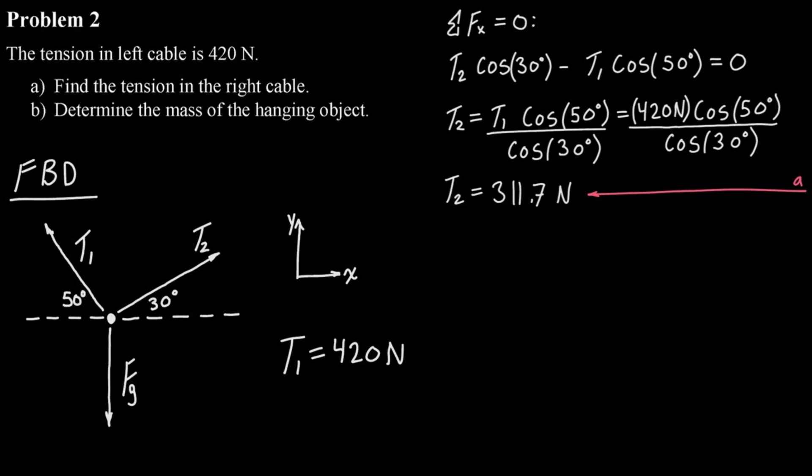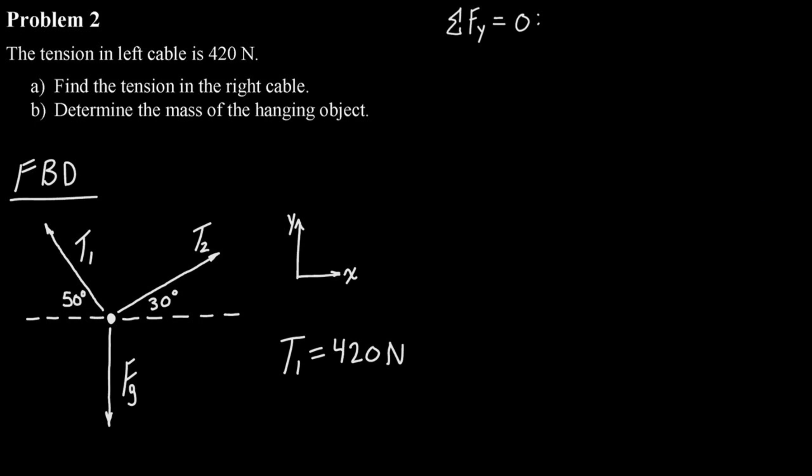Now that we know the tension in the right side of that cable, we can use the sum of forces in the y direction equal to zero to determine the mass of the hanging object. So in the y direction, we've got T1 sine 50, so that's going to be the y component of T1, which is pointing upwards, so it's going to be positive.